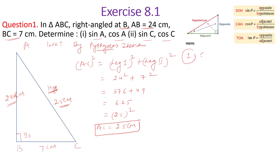AC is 25 centimeters. Now for the first part, we find sine of A and cosine of A. Using SOH — sine equals opposite over hypotenuse — if we consider angle A as theta, the opposite side is BC which is 7, and the hypotenuse is AC which is 25. So sine of A equals 7 upon 25.